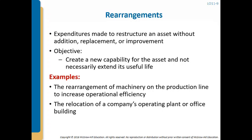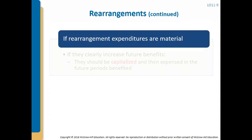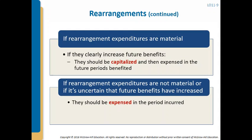Rearrangements are expenditures to restructure an asset without addition, replacement, or improvement. The objective is to create a new capability for the asset, not necessarily extend its life. Examples include rearrangement of machinery on a production line to increase operational efficiency, or relocation of a company's operating plant or office building. If the rearrangement expenditures are material and increase future benefits, they should be capitalized and expensed in the future periods that benefit. If not material or if it's uncertain whether future benefits have increased, expense in the period incurred.